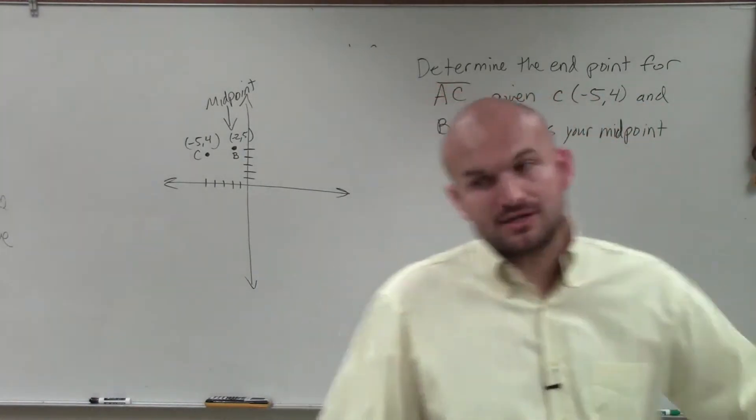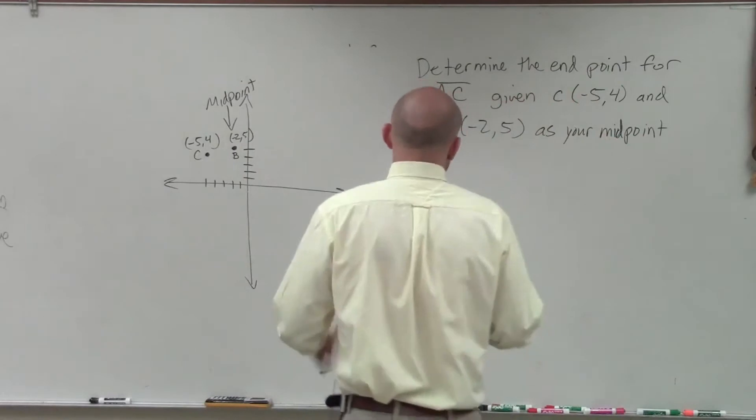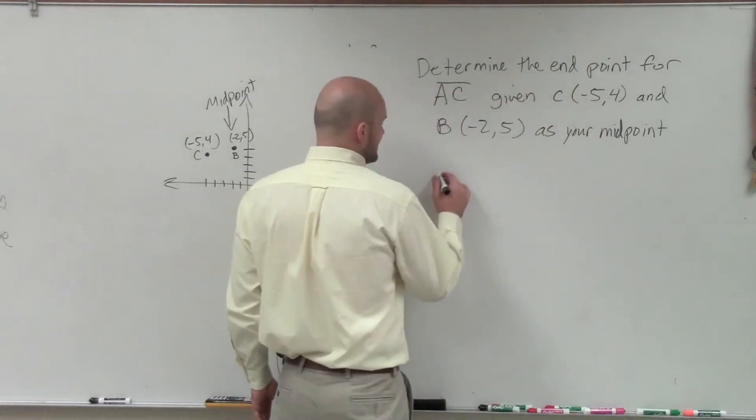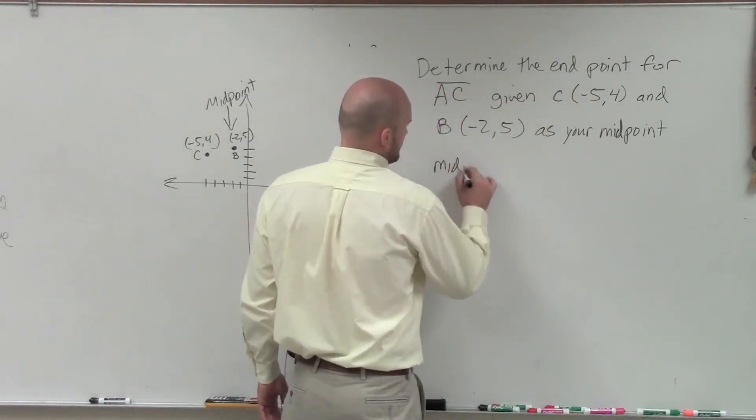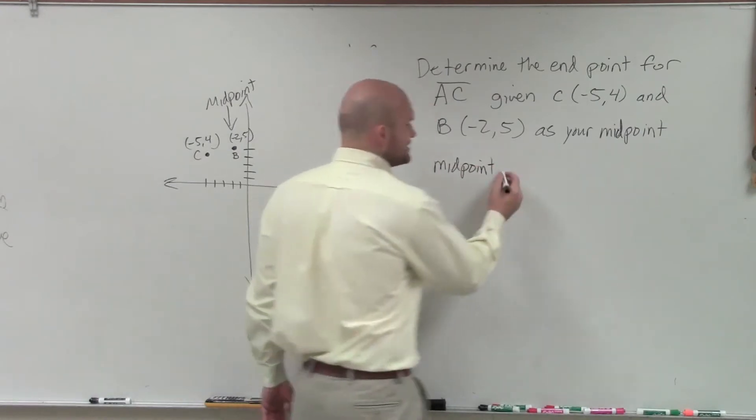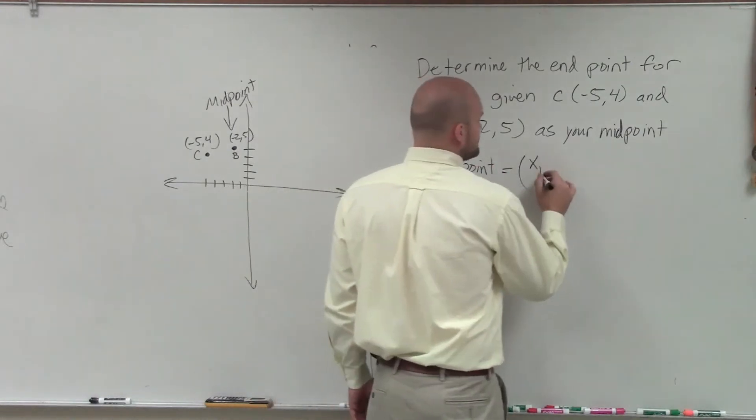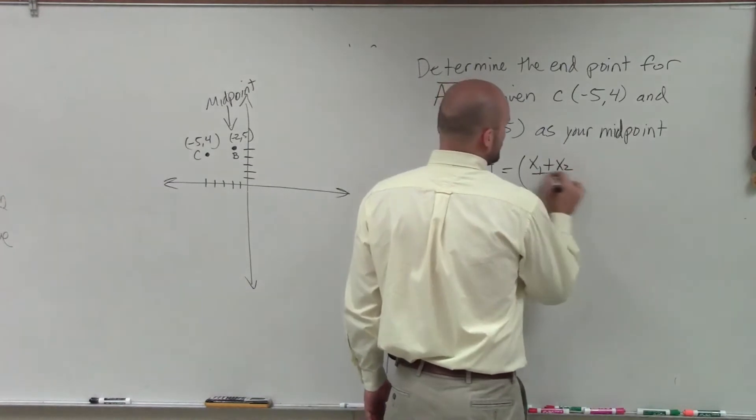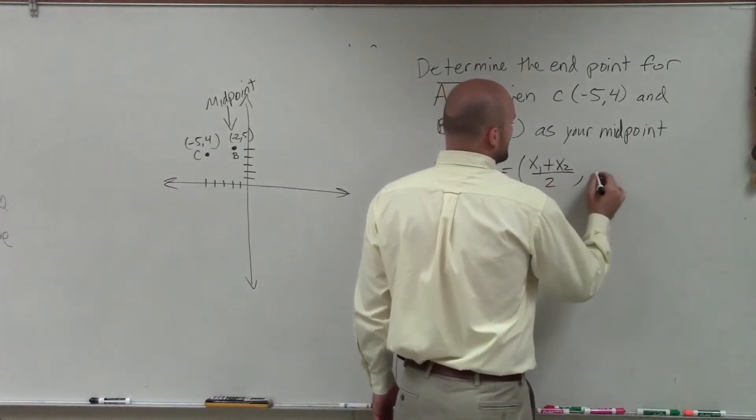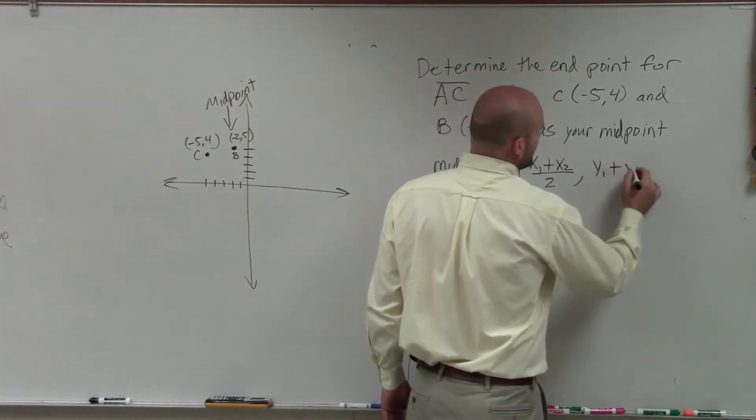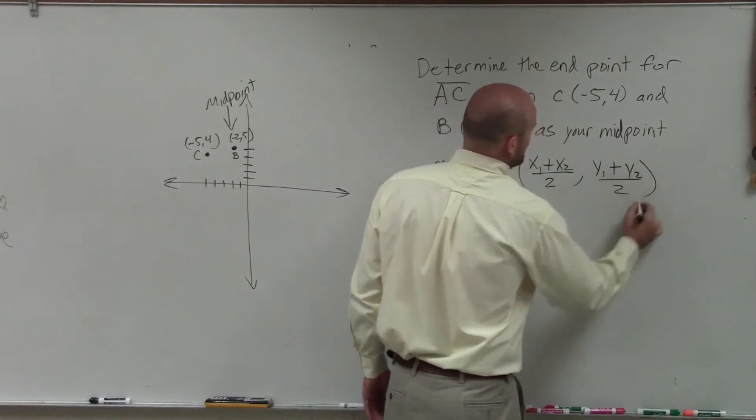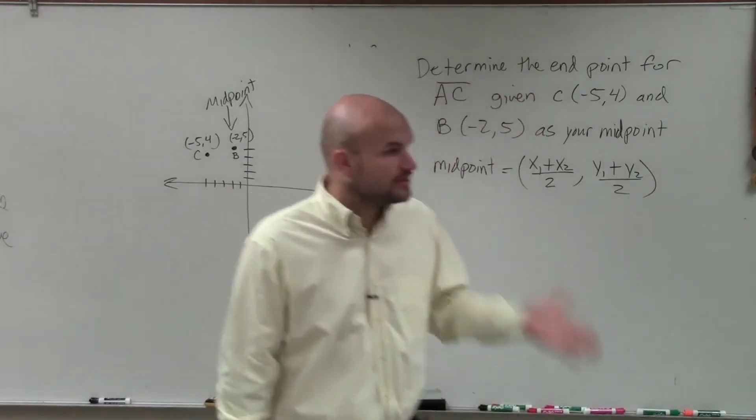So we need to go back to our formula. And what does our formula say? The formula says, our midpoint, the formula for the midpoint looks like this: x1 plus x2 divided by 2, comma, y1 plus y2 divided by 2.